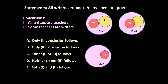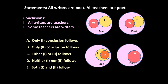In the third method, all writers are poets and all teachers are poets, meaning all writers are teachers as well — so the writers circle is entirely inside the teachers circle, which is inside the poets circle. There is one more approach where all writers are poets and all teachers are poets with their circles separate but both inside poets. So any one of these four representations may be true.